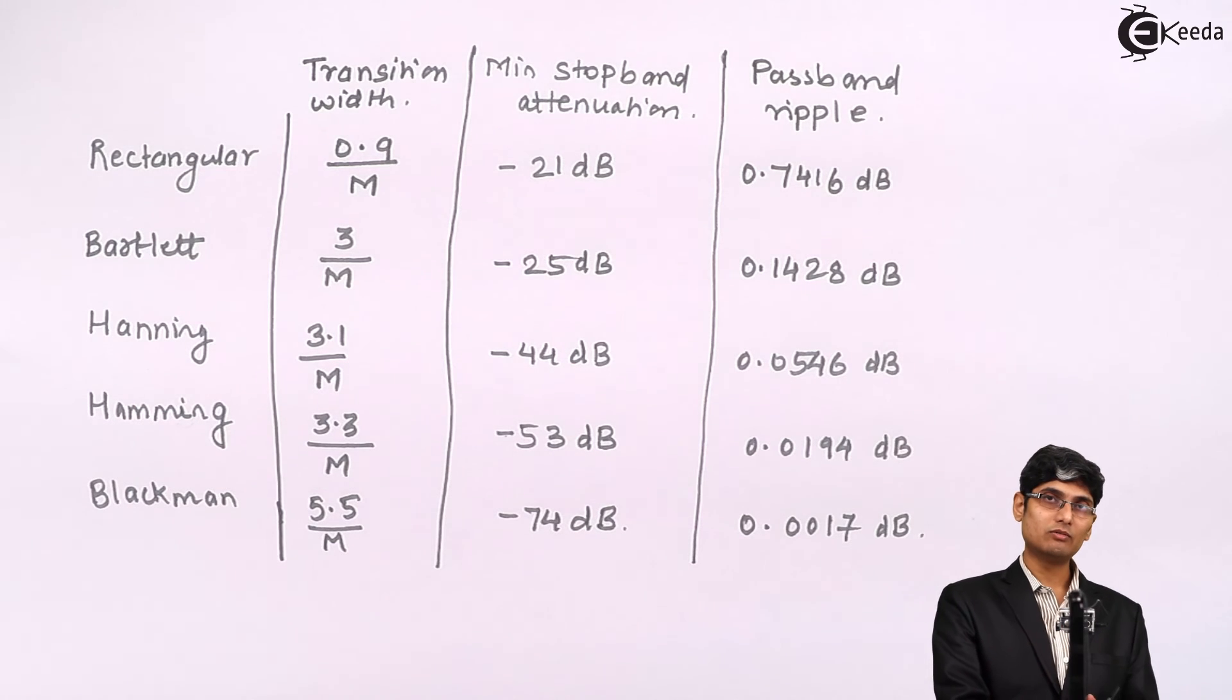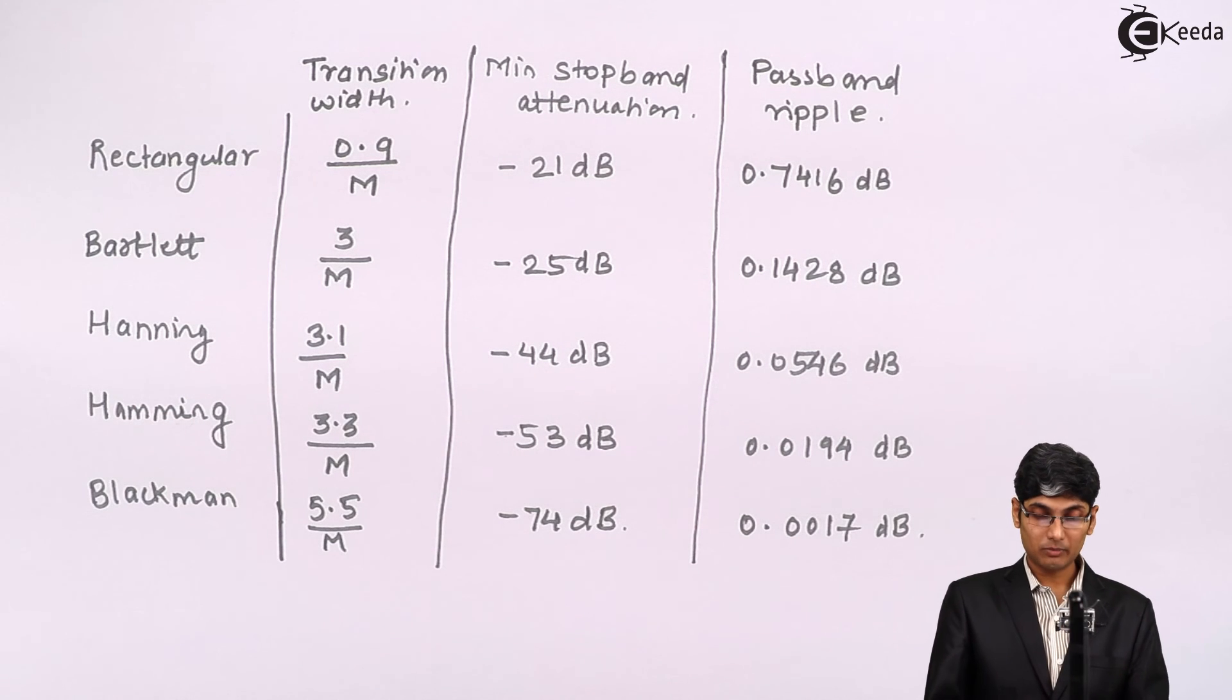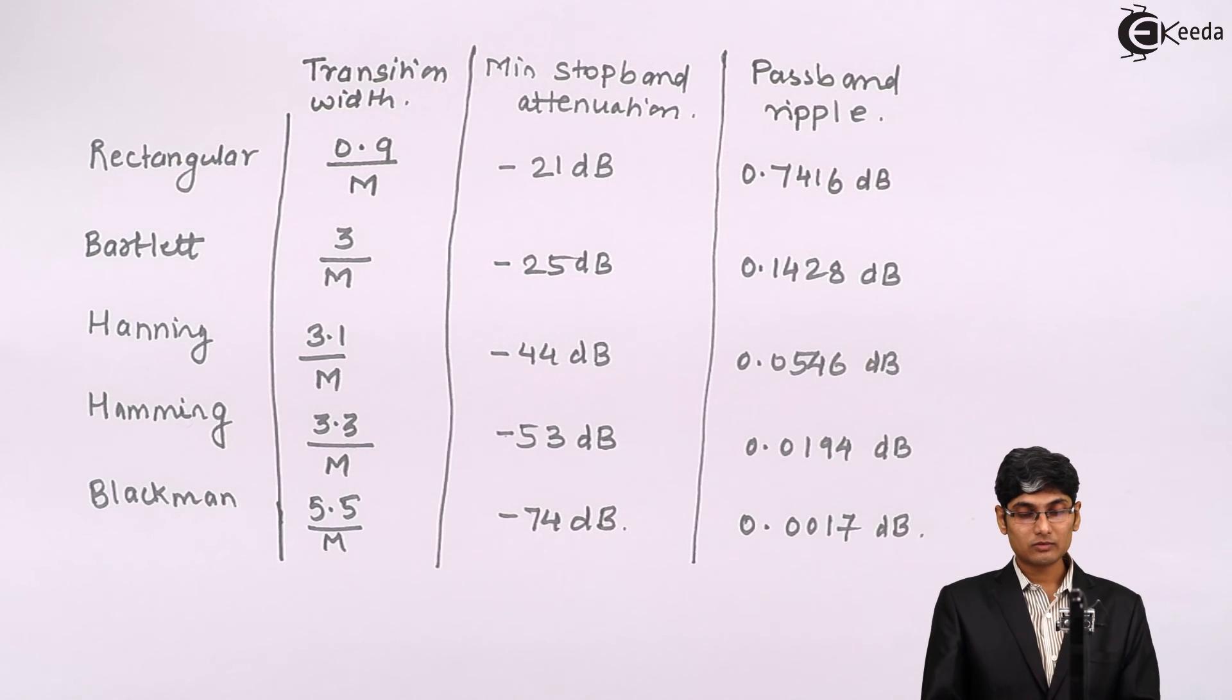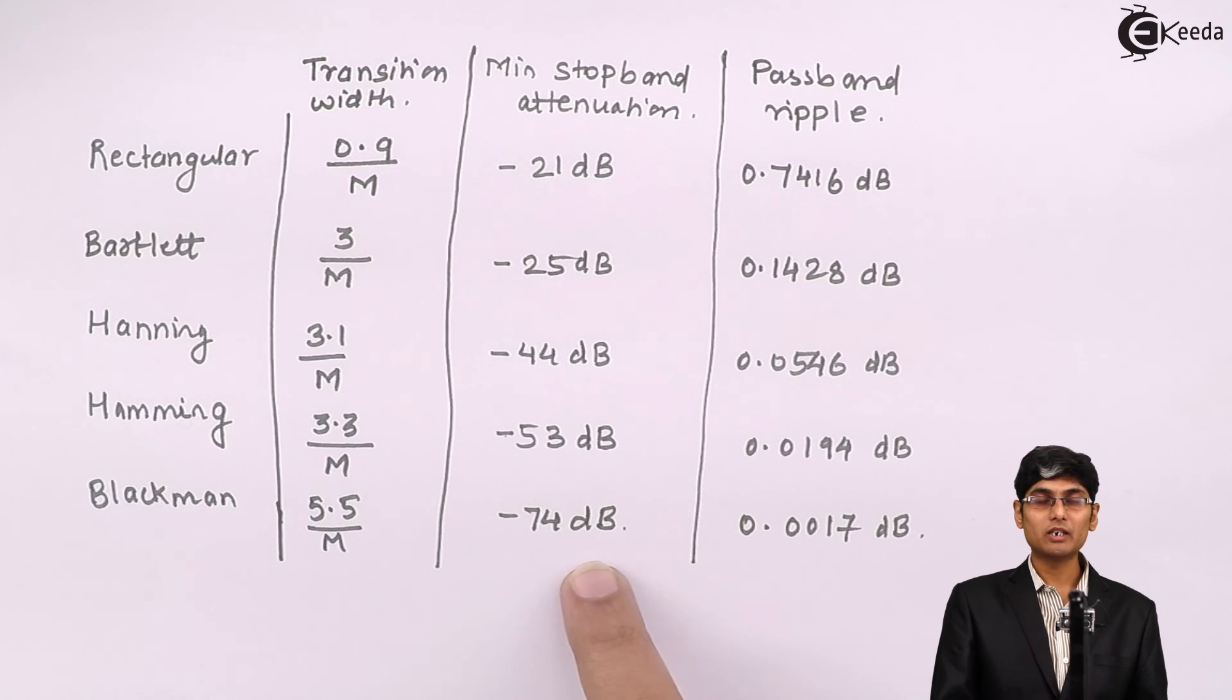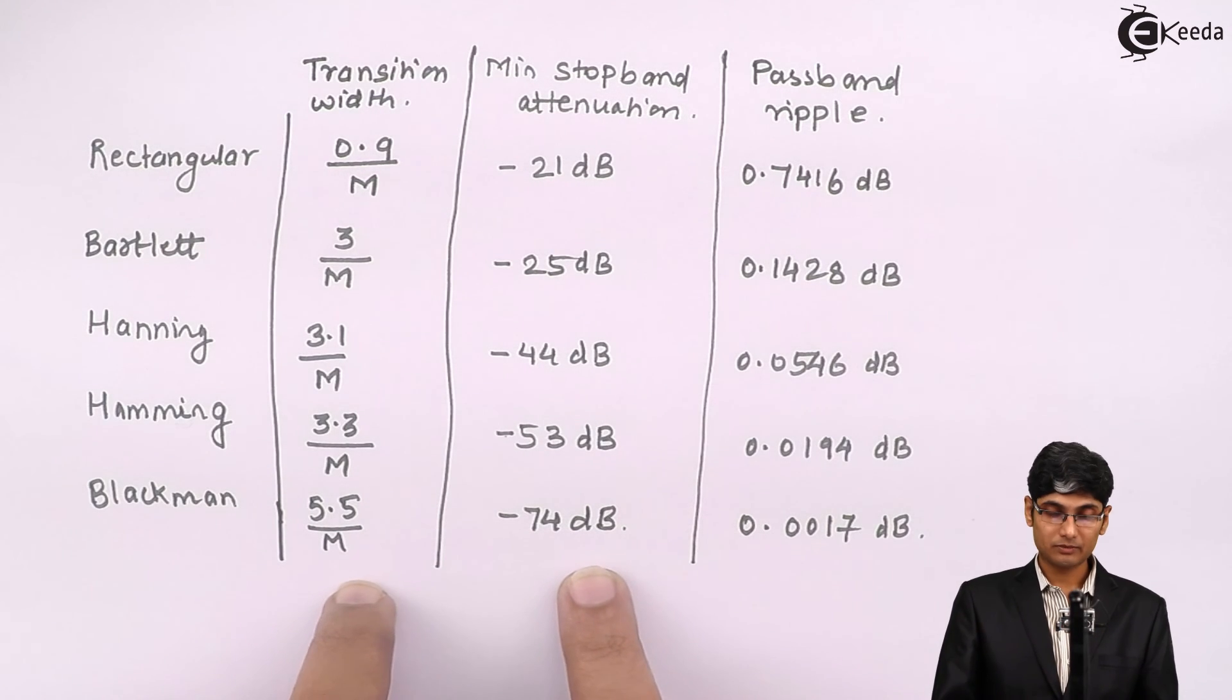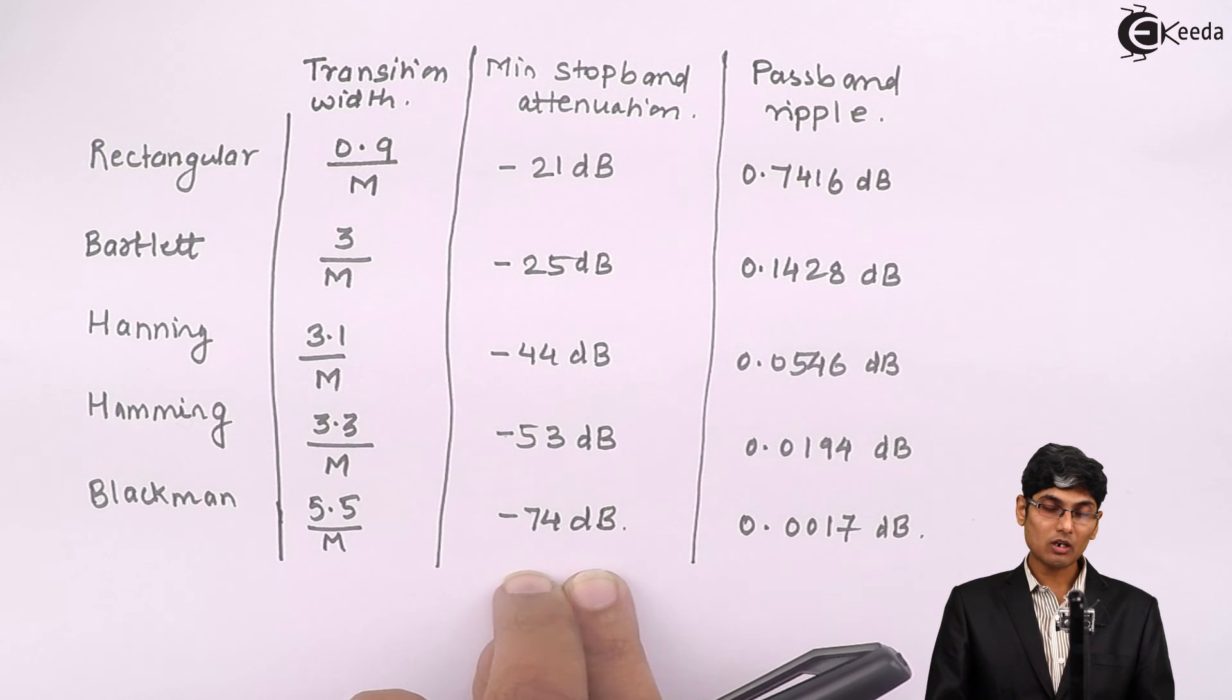From these three characteristics, the major characteristics that a reader should focus on are minimum stopband attenuation and transition width, because minimum stopband attenuation will tell us from the problem which window to be selected.